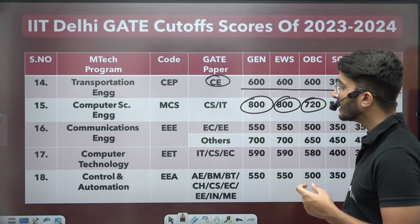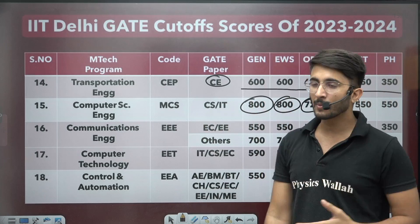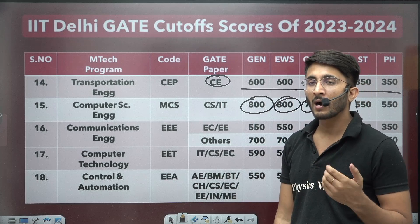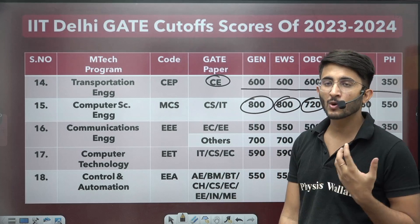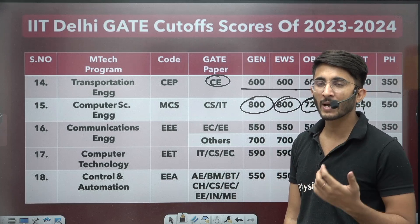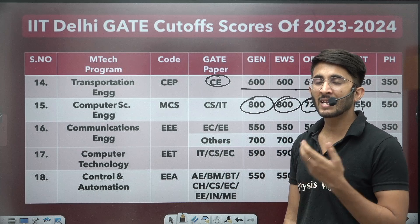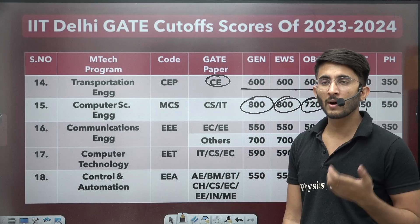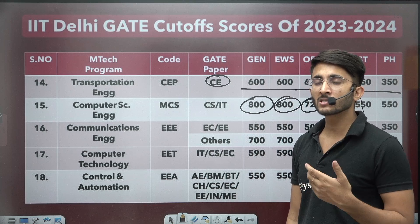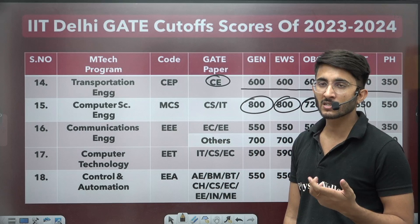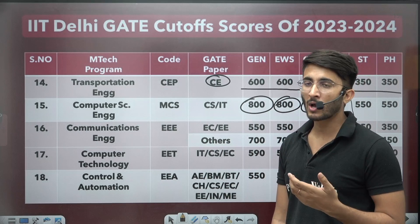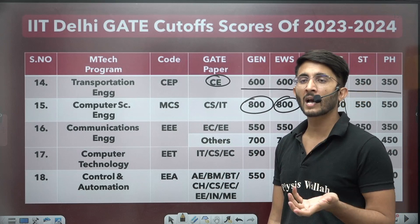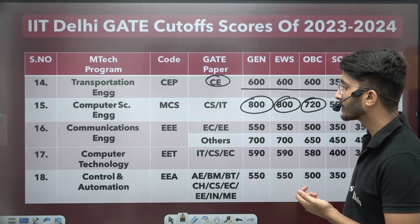For Computer Science Engineering, the cutoff is 800 for General, 800 for EWS, and 720 for OBC. The CS cutoff is higher because many students who become GATE toppers try to join IITs for masters in CS for high packages. Additionally, the number of vacancies released in different PSUs for CS branch is very less, so most students securing good marks join IITs for higher education — that's why CS cutoff is always high across different IITs.